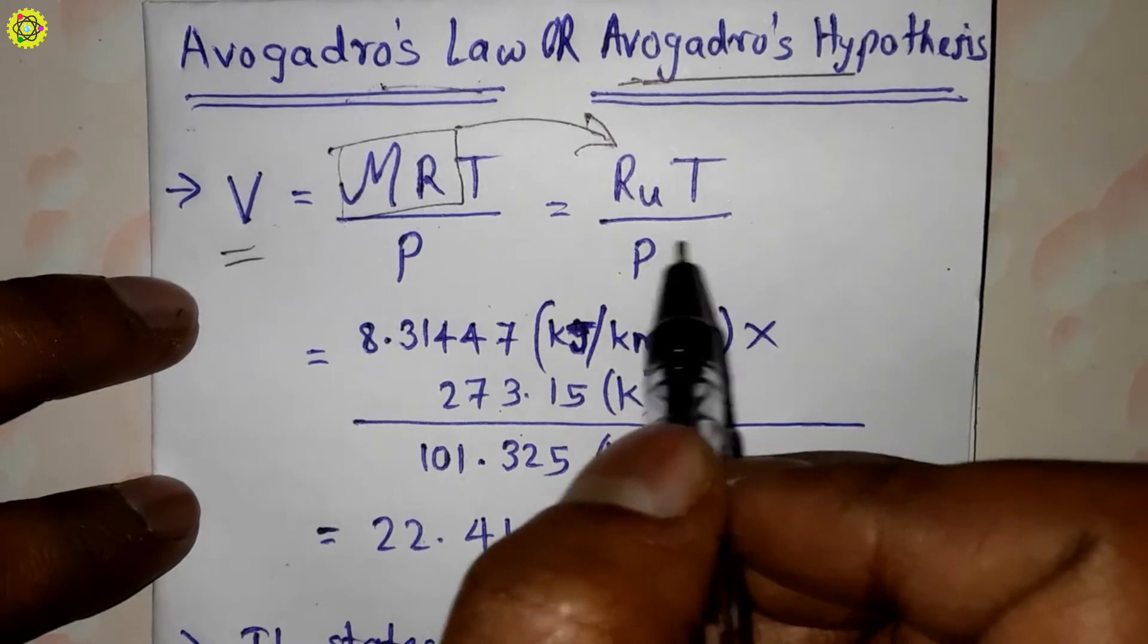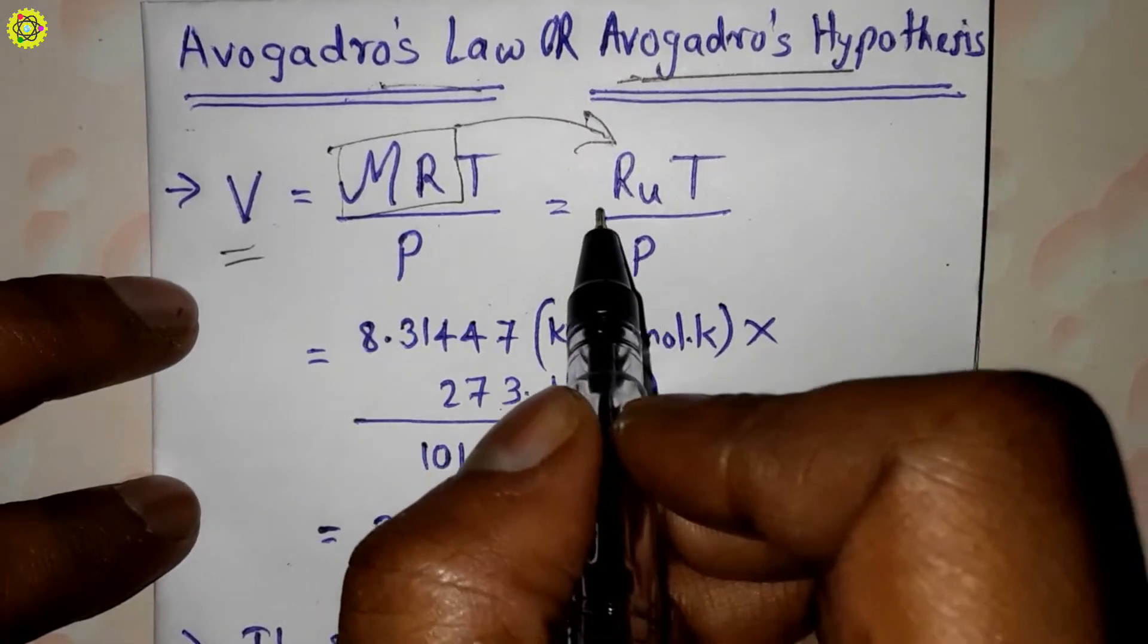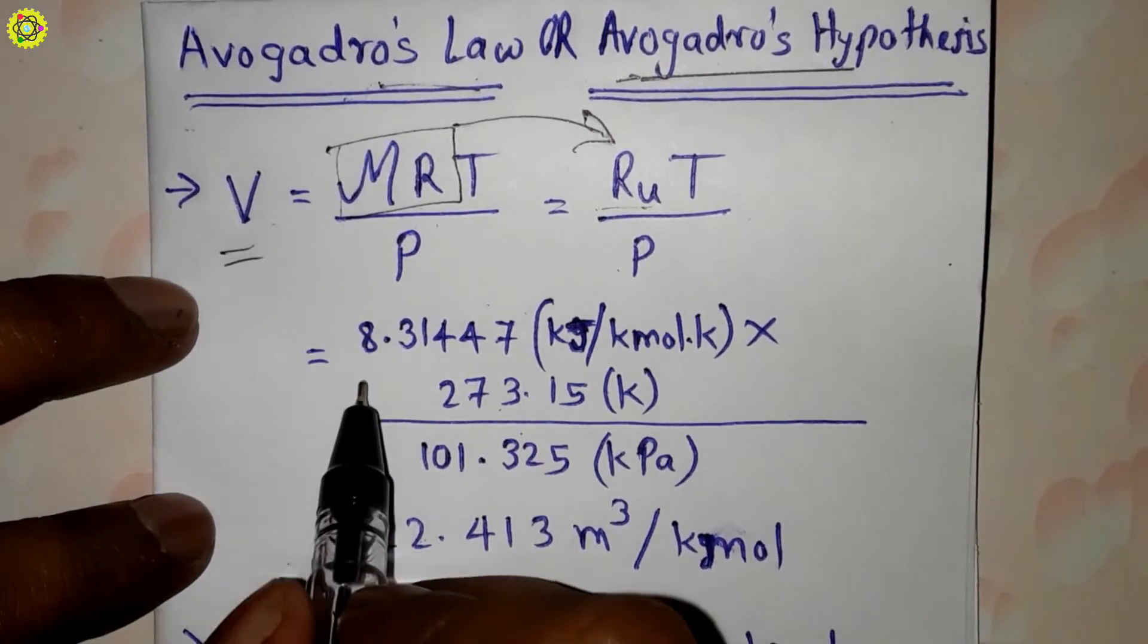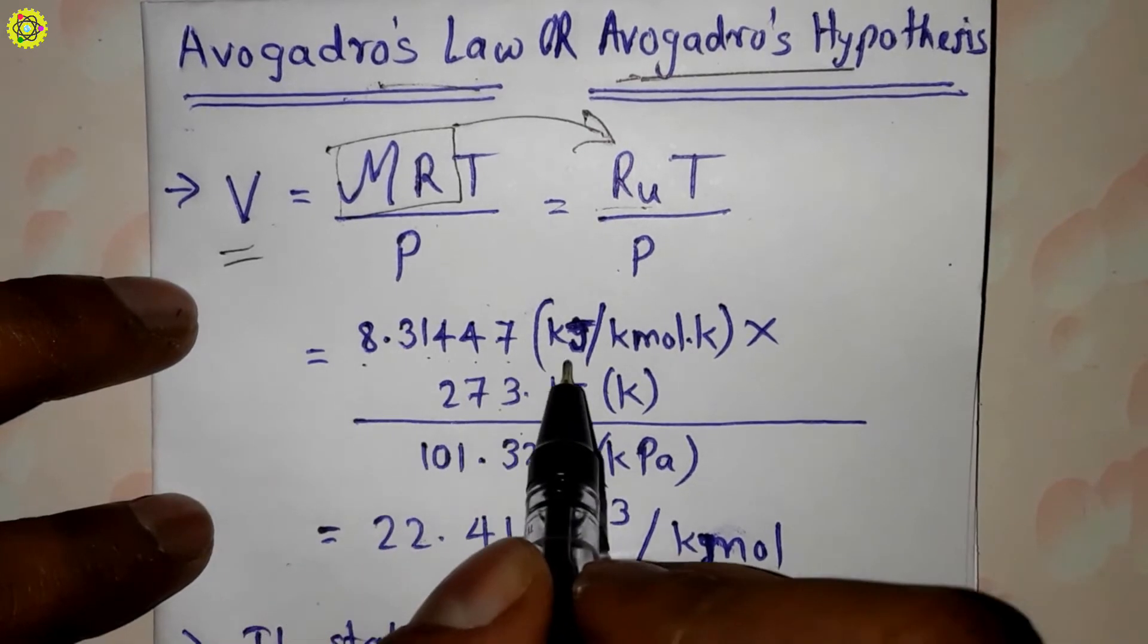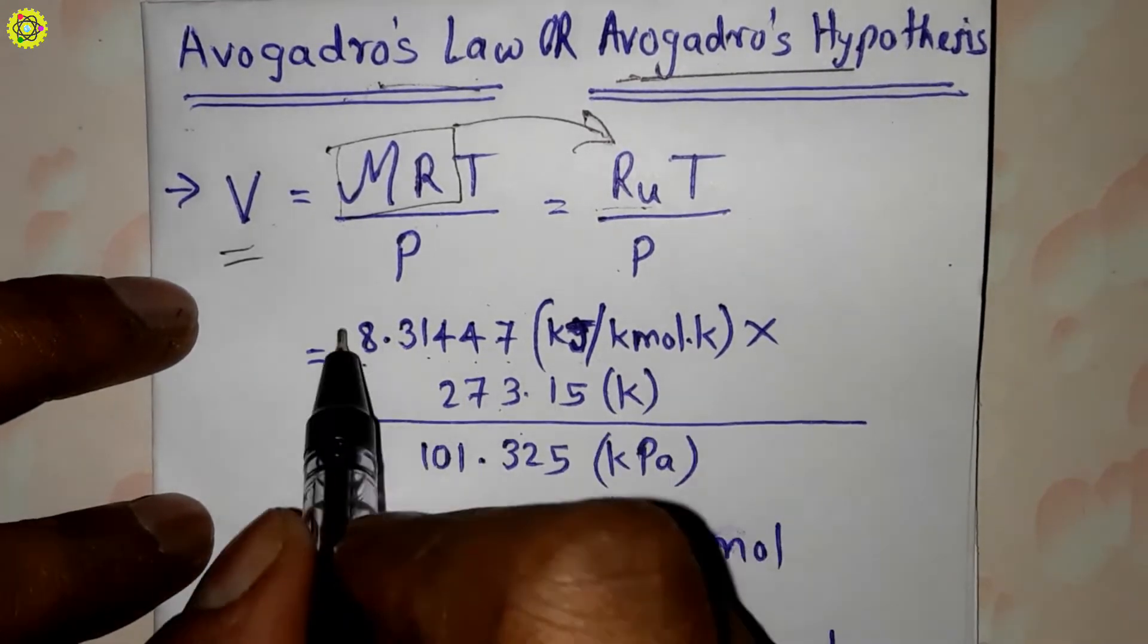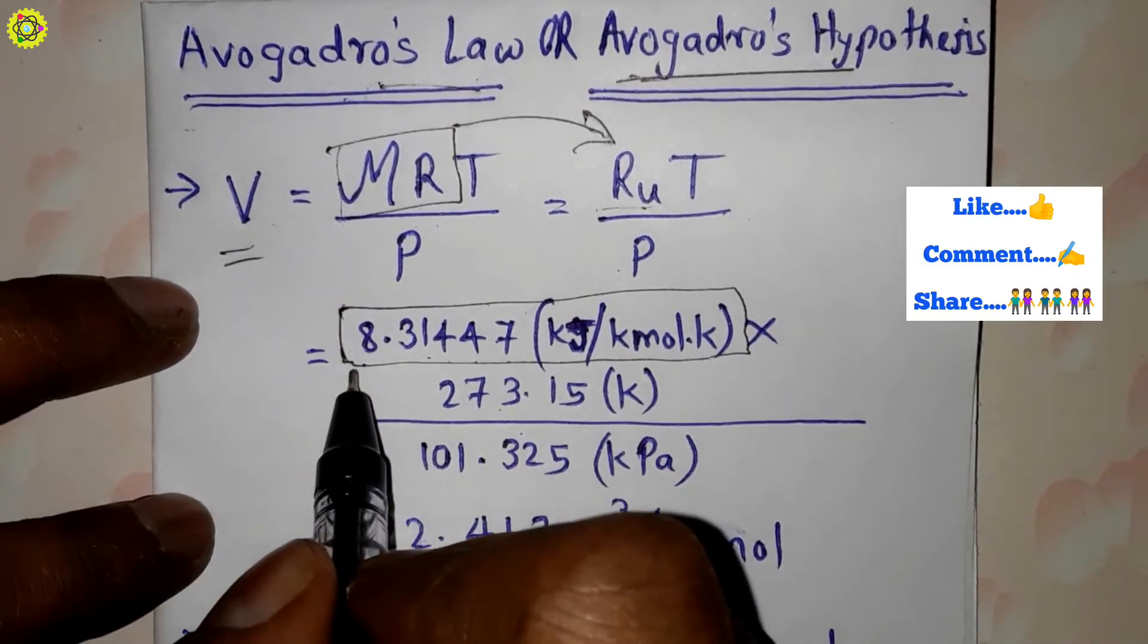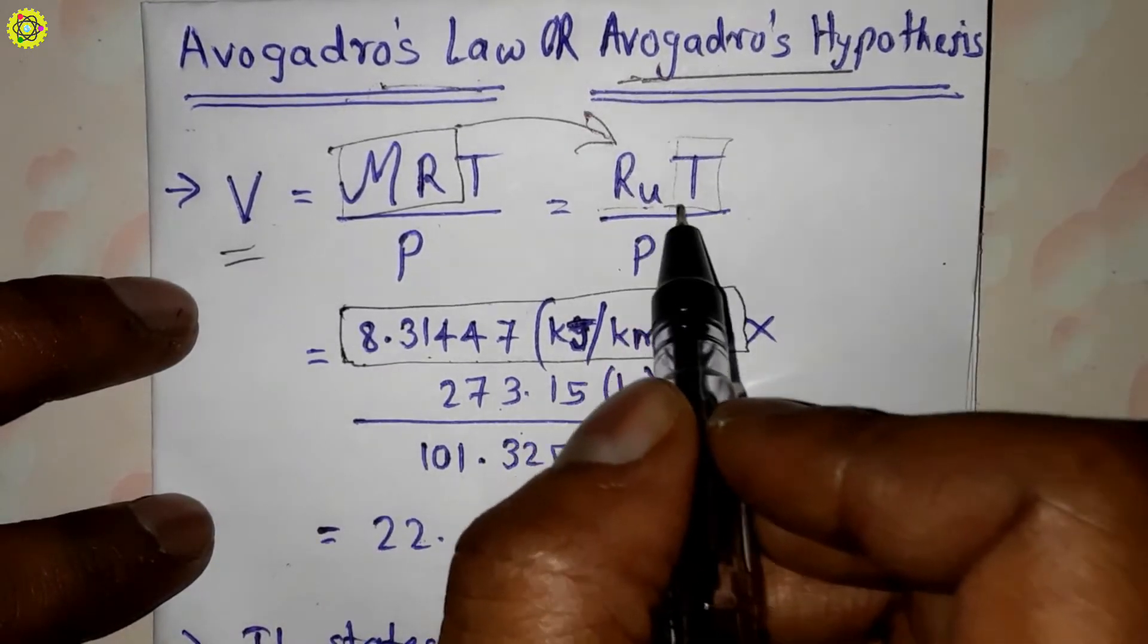Ru into temperature upon pressure. Now see, the value of Ru, the universal gas constant, is 8.31447 kilojoules per kg-mole-kelvin. This value is common for all perfect gases. And temperature here